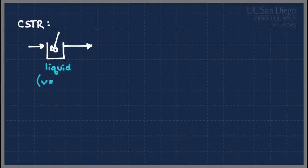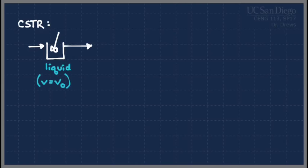As a result, the volumetric flow rate going out is equal to the volumetric flow rate going in. We always draw these CSTRs as open — like there's no cap on the top. But the liquid level, even if it really is open, is level-controlled. There's some kind of meter on there keeping those things going, so the liquid level inside the CSTR does not change.